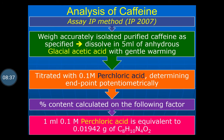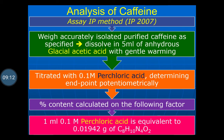For analysis, the IP method 2007 is used. Accurately weighed purified caffeine is dissolved in 5 ml of anhydrous glacial acetic acid with gentle warming, then titrated with 0.1 molar perchloric acid. The end point is determined potentiometrically. The percentage content of caffeine is calculated using the factor: 1 ml of 0.1 molar perchloric acid is equivalent to 0.01942 g of caffeine.